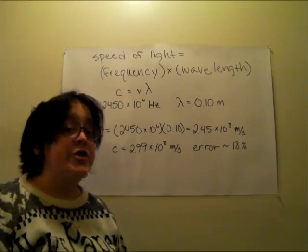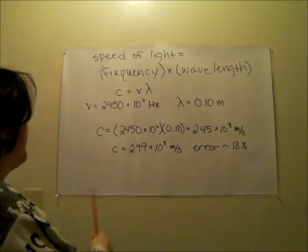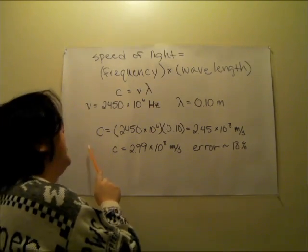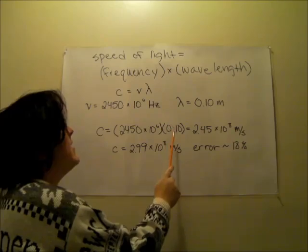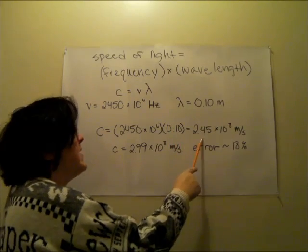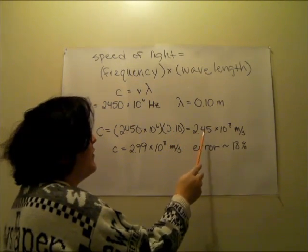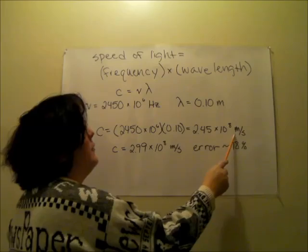So the distance between them should be the wavelength. So for our calculations, the speed of light equals 2450 times 10 to the sixth times 0.1, which gives us a final answer of 2.45 times 10 to the eighth meters per second.